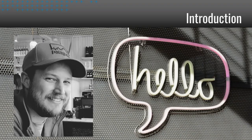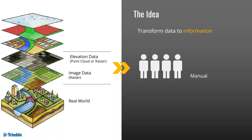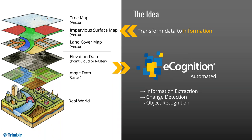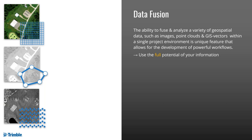Thank you for attending today. My name is Keith Peterson. I'm the product manager for Trimble E-Cognition. We have a wonderful guest speaker, but before that, I just want to run you through the idea of E-Cognition. It's about transforming our geospatial data into information — taking those various data layers and replacing that manual interpretation process by utilizing the automated tools that E-Cognition contains. We do information extraction, change detection, and object recognition in an automated way to create information products like land cover maps.